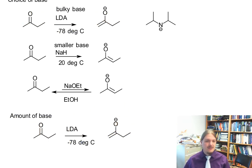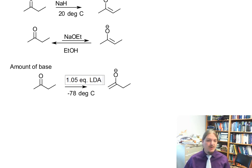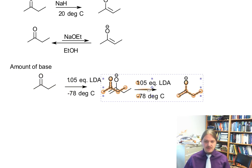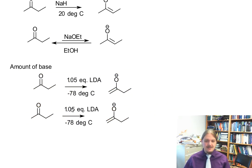And so here's how that works. If you use 1.05 equivalents, so just a slight excess of LDA, you get the kinetic enolate.